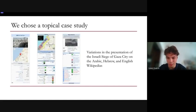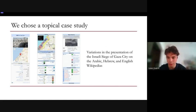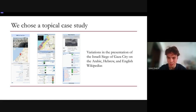For this research we needed a case study and we chose what we saw as one of the most controversial topics right now, working with the Wikimedia Foundation. We studied the ongoing war in the Gaza Strip as an example of a controversial topic subject to misinformation and disinformation. As an example, I put screenshots from three different language Wikipedias of the same article — the Israeli siege of Gaza City in Arabic, Hebrew, and English. The event is framed in different ways across these Wikipedias, and we thought this was the perfect case study to examine neutrality.